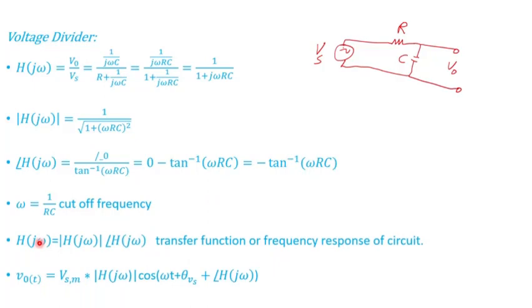And obviously, you can write the transfer function in terms of polar form. And from here, you see that V out, or the output voltage in phasor is H, or the transfer function times the input.